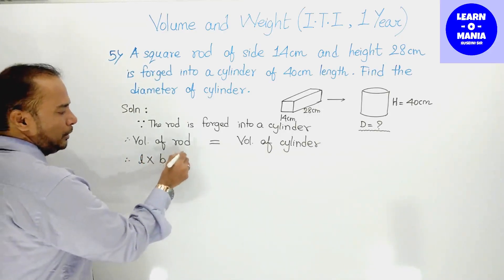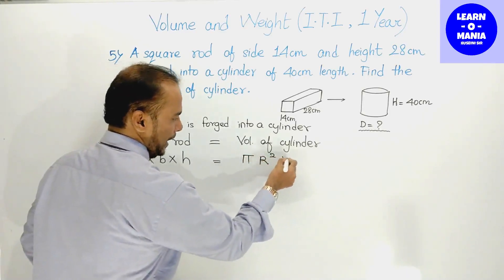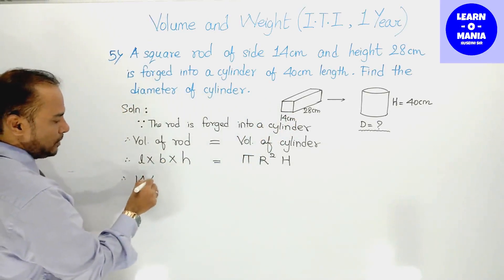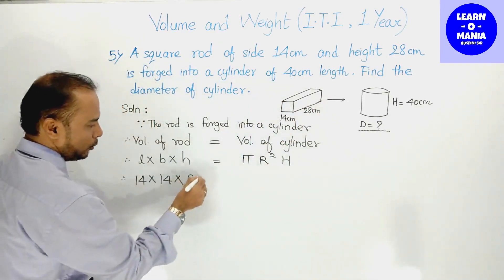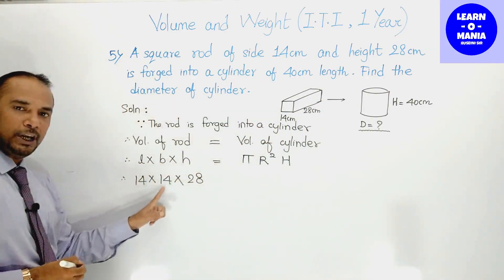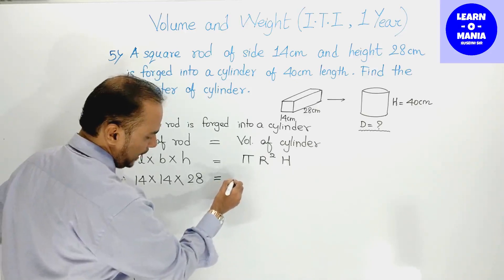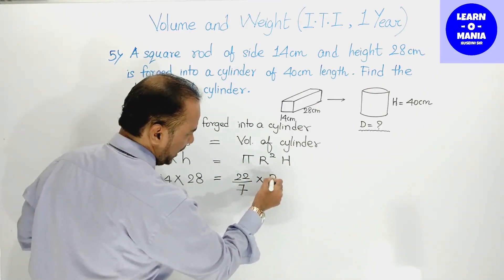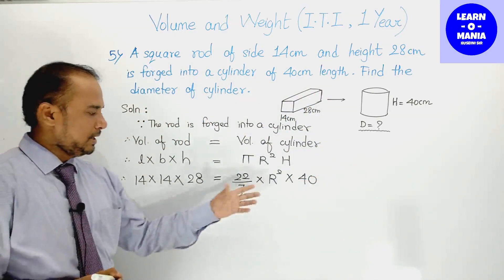Rod cuboid shape में था, तो formula होगा: length × breadth × height। Cylinder के लिए formula होगा: π × r² × h। Rod की length = 14 cm, breadth = 14 cm, height = 28 cm। Pi की value लेंगे 22/7। Cylinder की height = 40 cm। र square as it is रखेंगे।